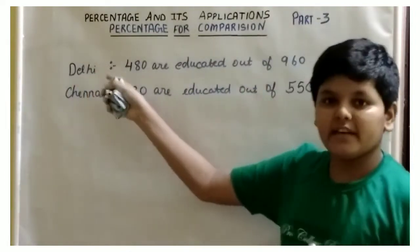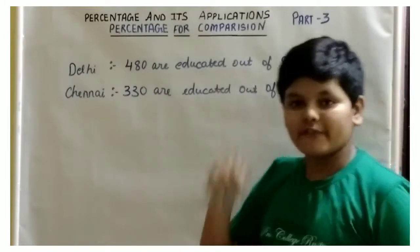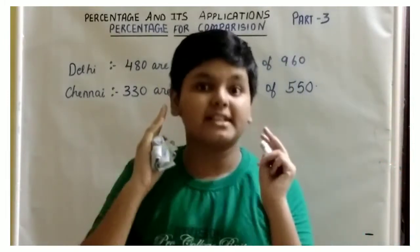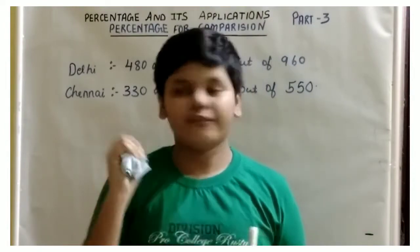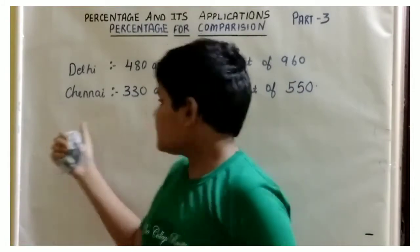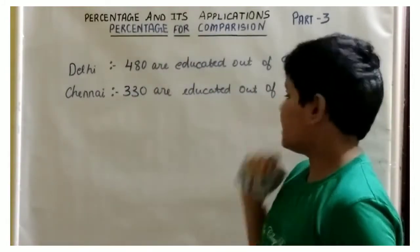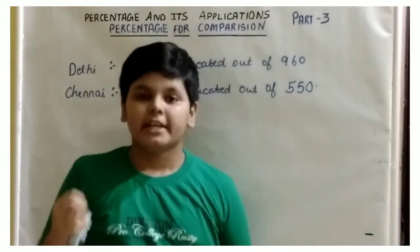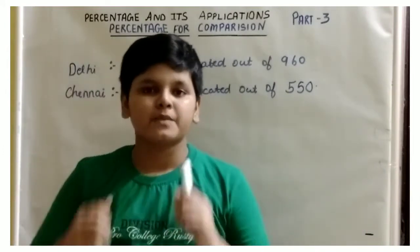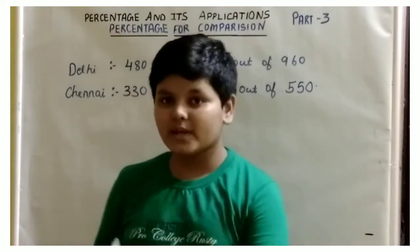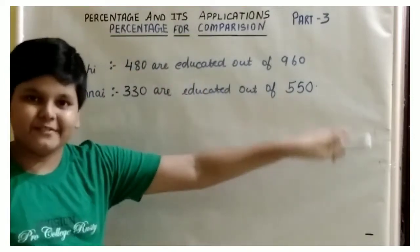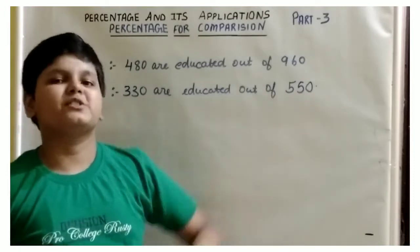In Delhi, 480 women are educated out of 960 women. And in Chennai, 330 women are educated out of 550 women. We have to find out the percentage — which city, Delhi or Chennai, has more educated women?